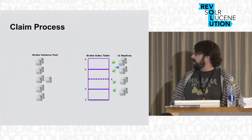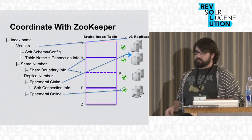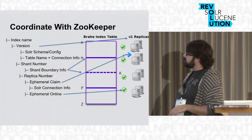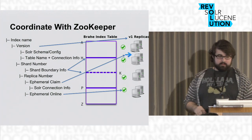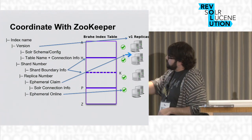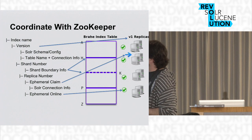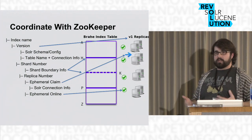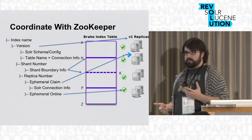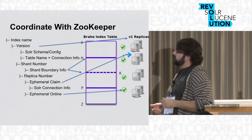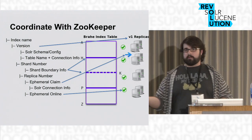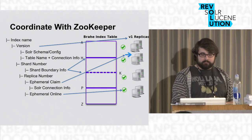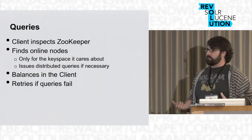Tying this together with the ZooKeeper node information: you can see the version at the top, the different shards, and the two key boundaries they point to. An ephemeral claim node means the shard has been claimed and is probably still pulling data down. You could also take it offline but leave it claimed so nobody sends queries to it during a merge. The ephemeral online node is what clients use to know where to send queries.